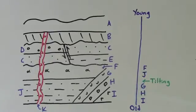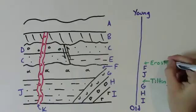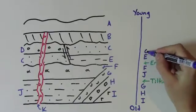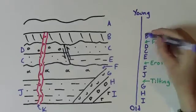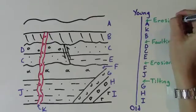E, C, and D were deposited and faulted, then eroded, followed by the deposition of B, the intrusion of K, and the deposition of A, and more erosion.